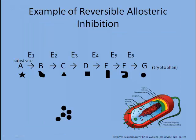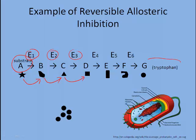Let's take a look at an example of reversible allosteric inhibition. Tryptophan is an amino acid that's synthesized by bacteria. It is used to build a protein that is in demand, and as you can see, it's built through a series of reactions, each one catalyzed by a different enzyme. This is a metabolic pathway and the end product is tryptophan.